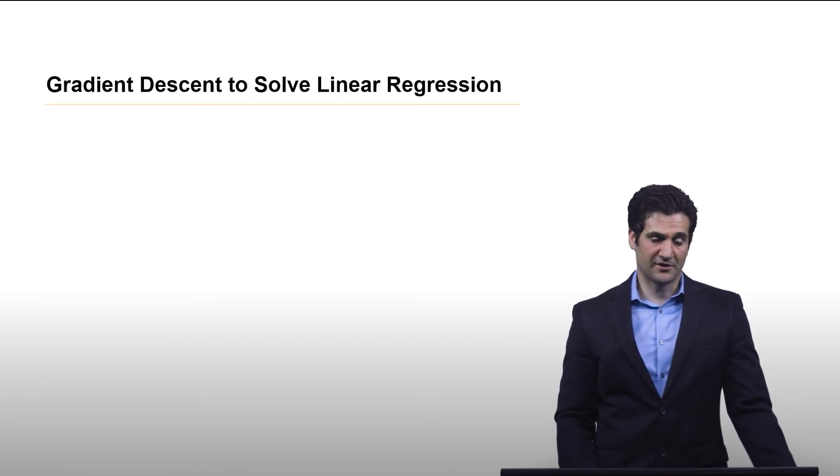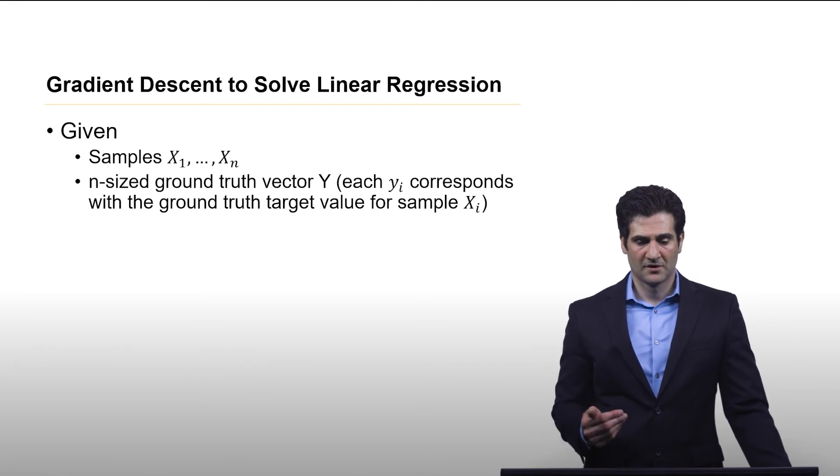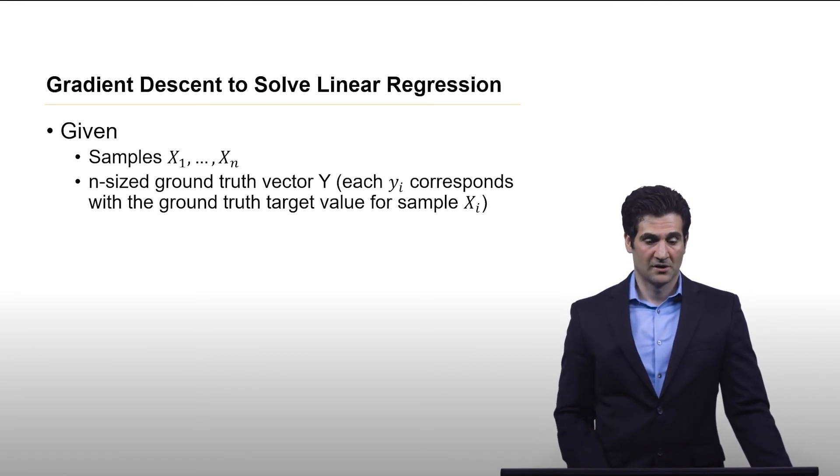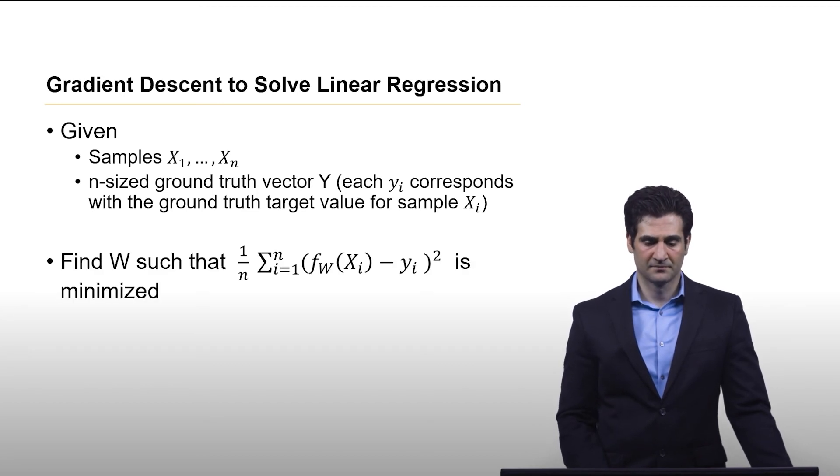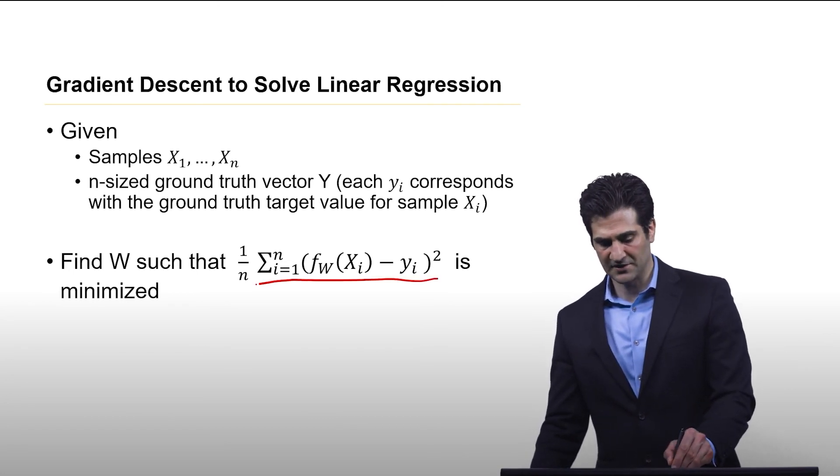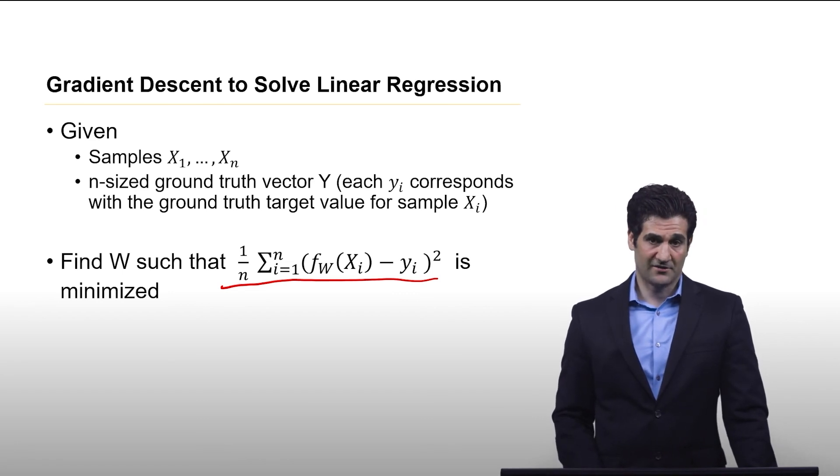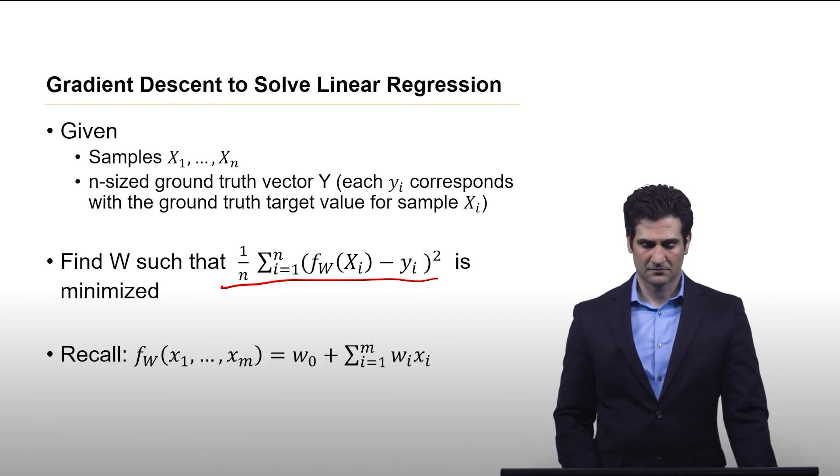So how is this used to solve linear regression? Well, you have your samples, you have x1 through xn, and you have your n-size ground truth vector y, and we're looking at this function to be minimized. This is mean squared error. And we're going to find the derivative of that function, or the partial derivative, with respect to each component of w. And just here is that shown in a little different notation.